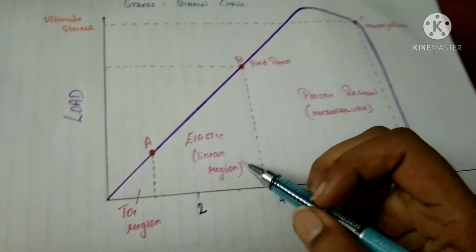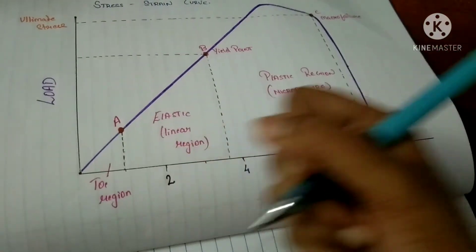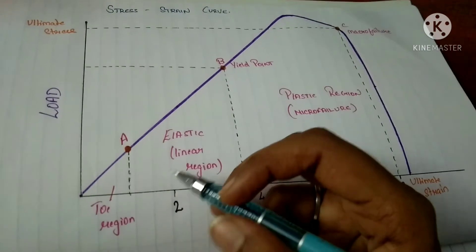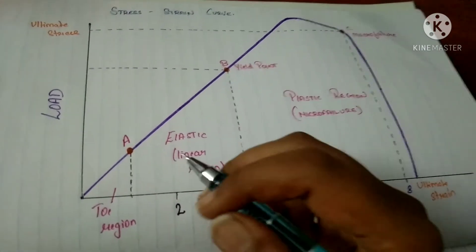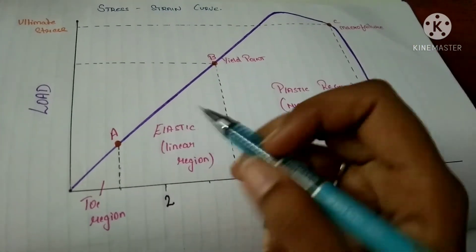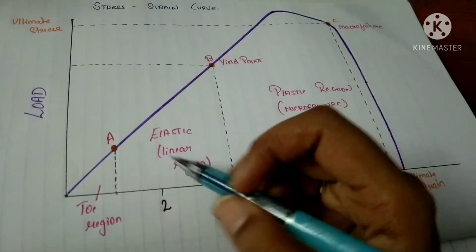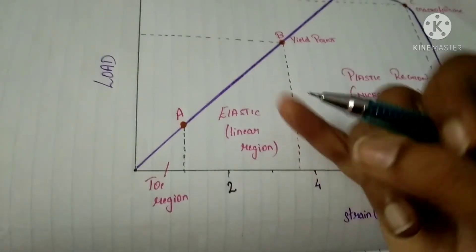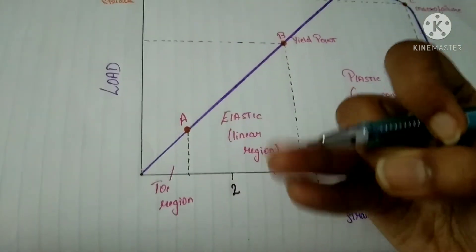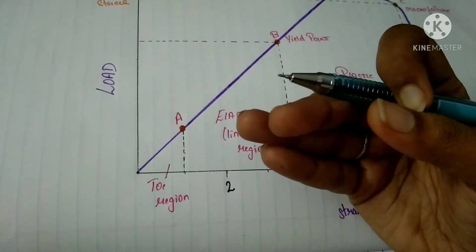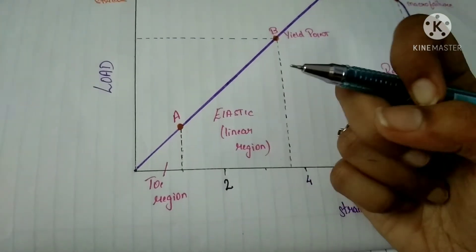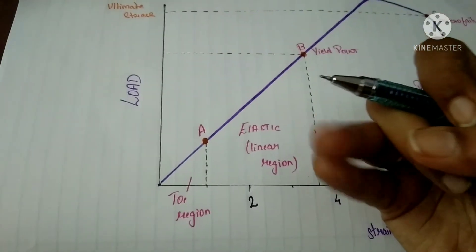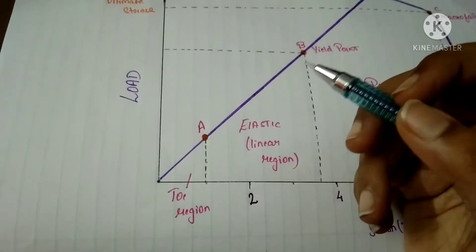In the elastic region, the fibers of the tissue are being stretched and they resist the applied force. After being stretched, they regain their original position. The linear region reflects the properties of the type of collagen, the fibril size, and the cross-linking of collagen molecules — specifically, the type of collagen, fibril size, and cross-linking type.